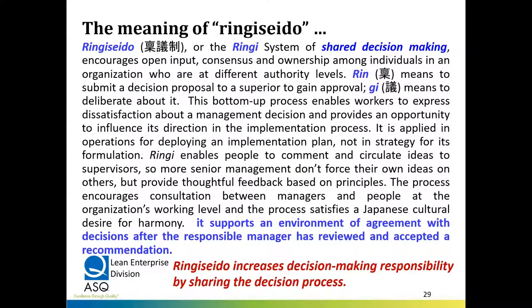Another idea is Ringisido, or the Ringi system — shared decision-making. It encourages open input, consensus, and ownership among individuals at different levels of authority. Ringi means to submit a decision proposal to a superior to gain approval, and gi means to deliberate about it. It's a bottom-up process where workers can express dissatisfaction with management decisions and influence the direction of implementation. Ringi enables people to comment and circulate ideas to supervisors so senior managers don't force their ideas on others, but get thoughtful feedback based on Kaizen principles, increasing shared decision-making responsibility.